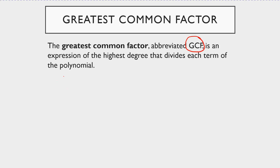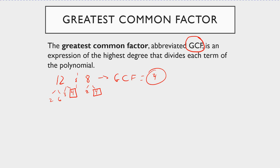To understand what I mean, take the numbers 12 and 8. The greatest common factor of these numbers — well, 2 goes into both of them, and 4 is the largest number that will divide evenly into both. So the greatest common factor of 12 and 8 is 4. I want to take this concept of finding the largest factor that goes into a number and apply it to factoring it out of a polynomial. What's going on is you're undoing the distributive property.